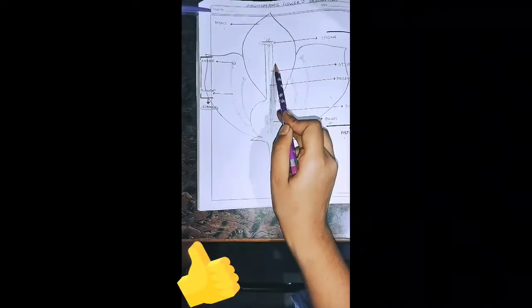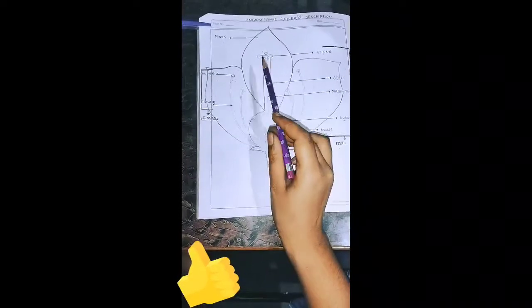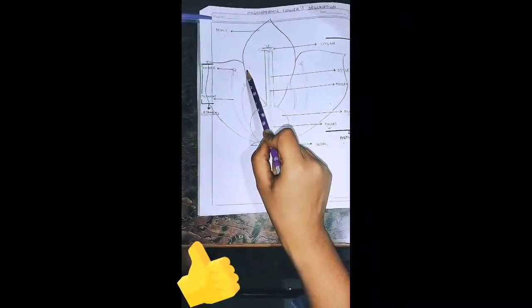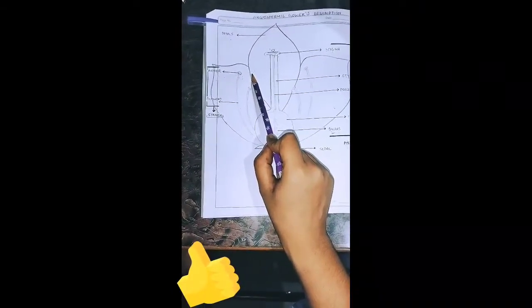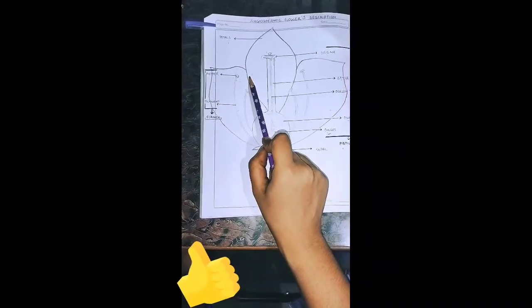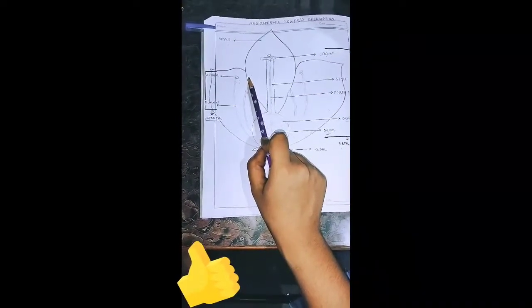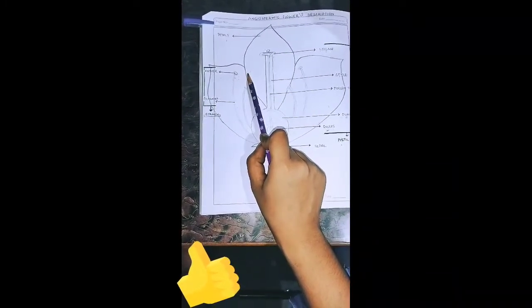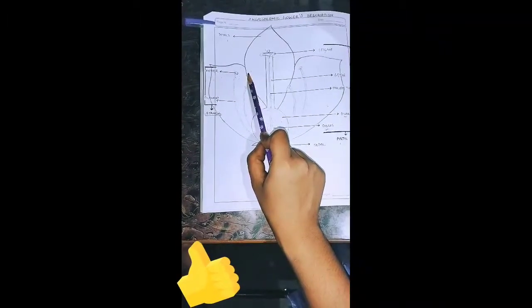The next part is petals. The petals are bigger sized leafy structures which have very bright colors. The main purpose of the bright color is to attract pollinating agents like insects towards them and help in the process of pollination.